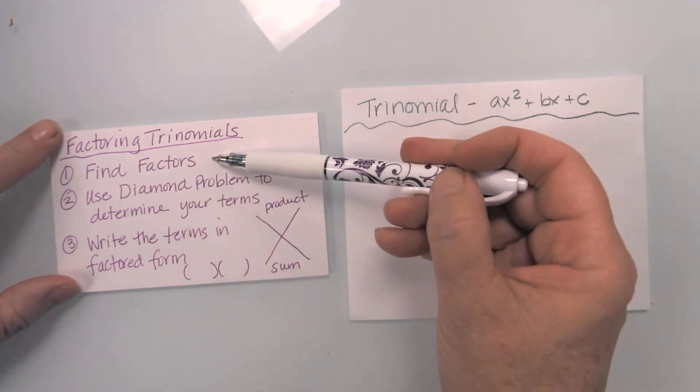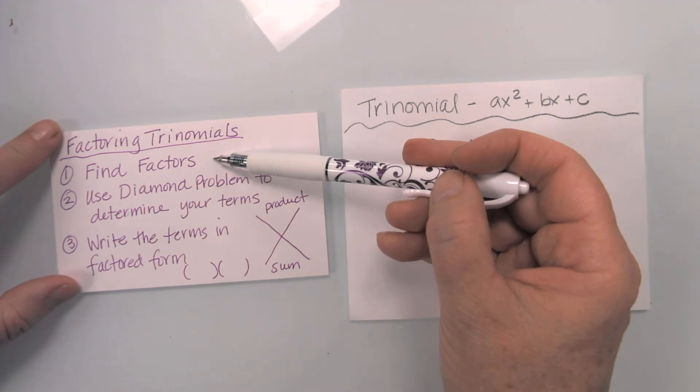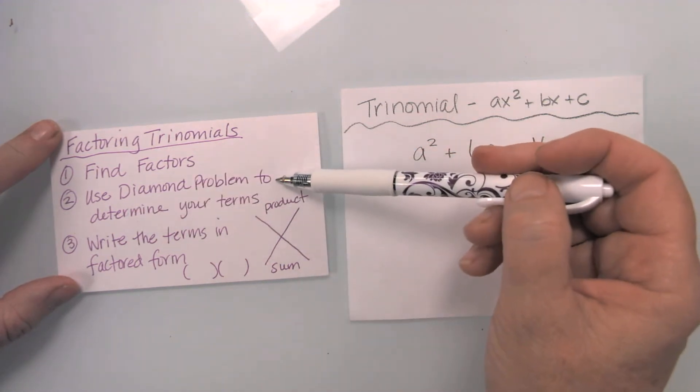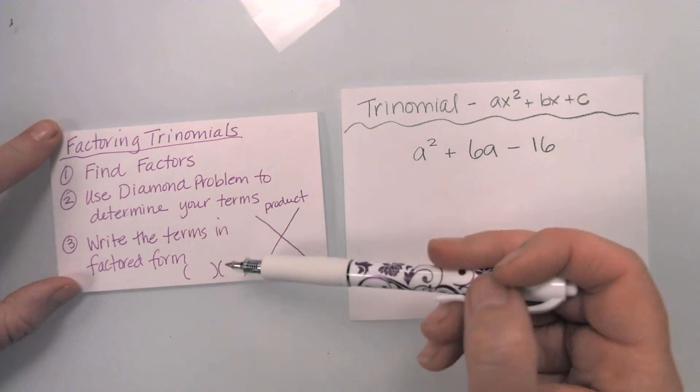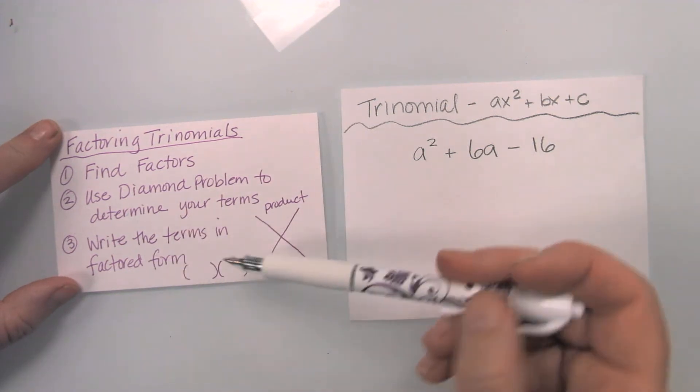First I'm going to find the factors of all the numbers. Then I'm going to use my diamond problem to determine what my terms will be. Then I will write the terms in factored form.